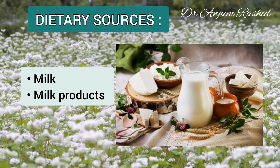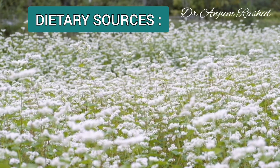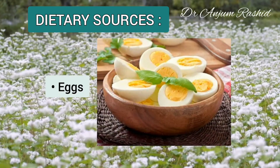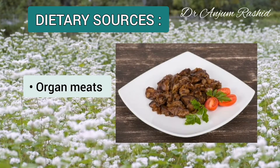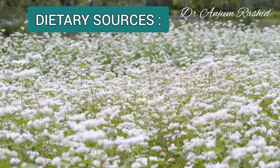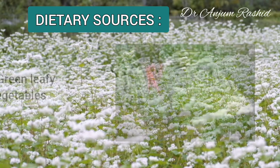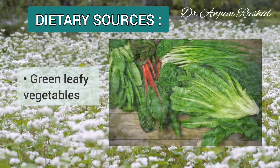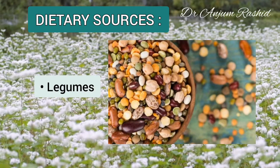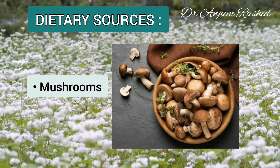Dietary sources of vitamin B2 include milk and milk products, eggs, organ meats, fortified or enriched cereals, flours and breads, green leafy vegetables, legumes, and mushrooms.